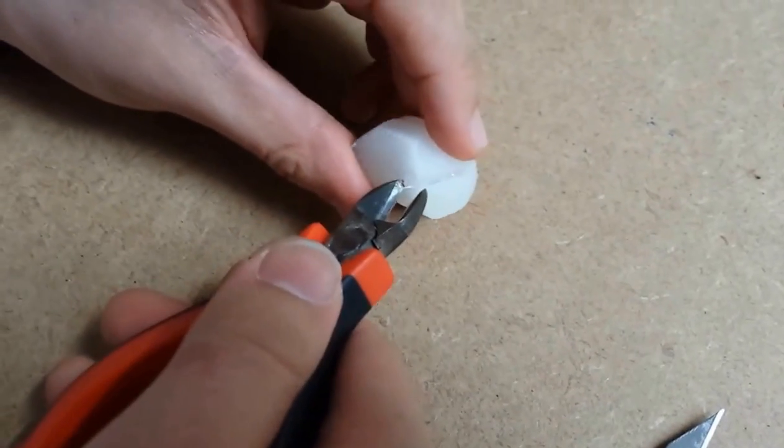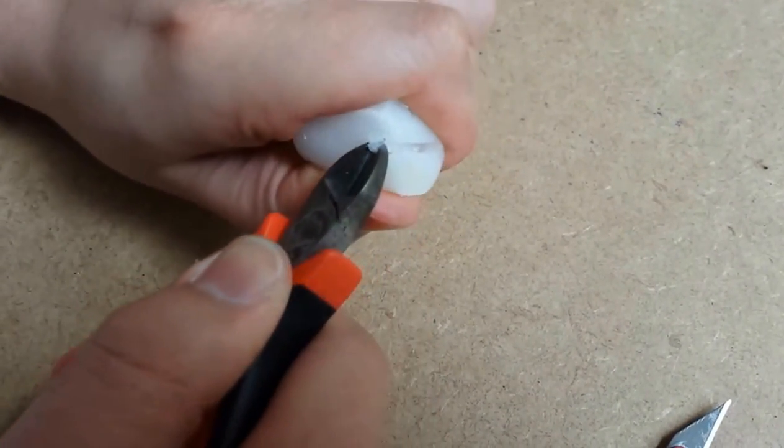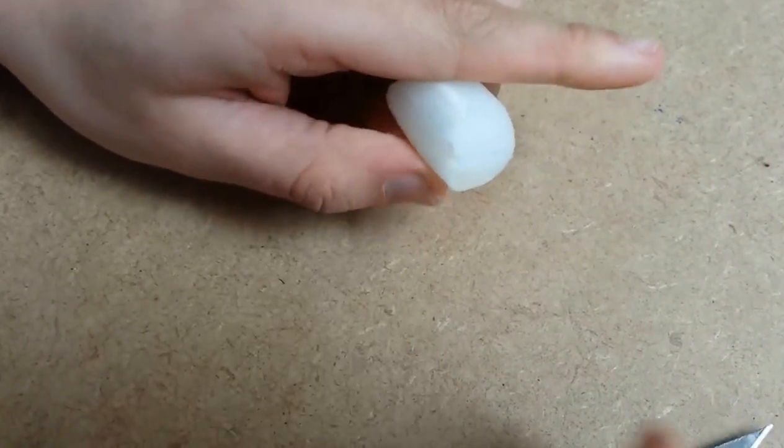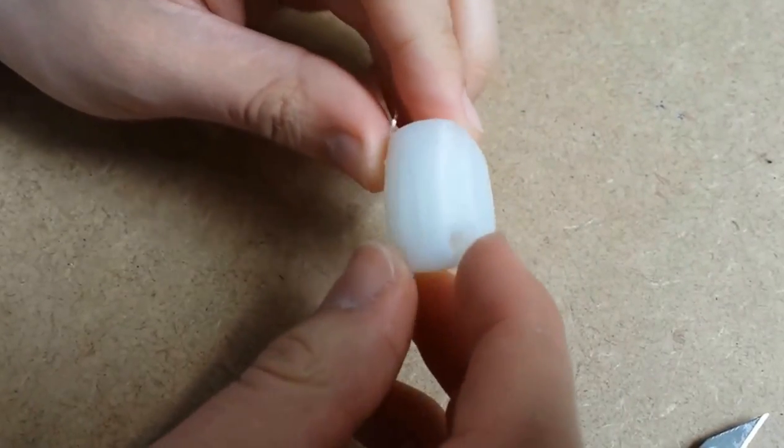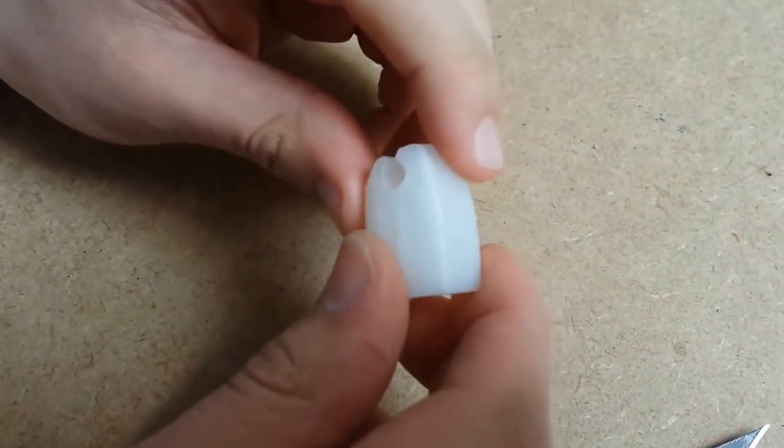And I'm just going to come along with these pointy cutters and use them kind of like pliers. That pops right out. And we've got a really nicely printed bit of Tormund Bridge.